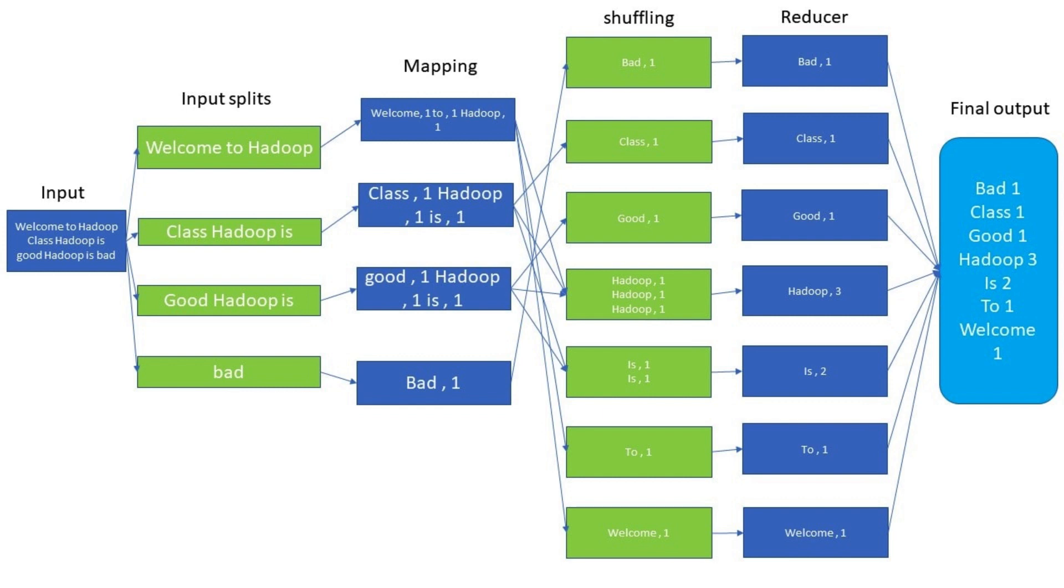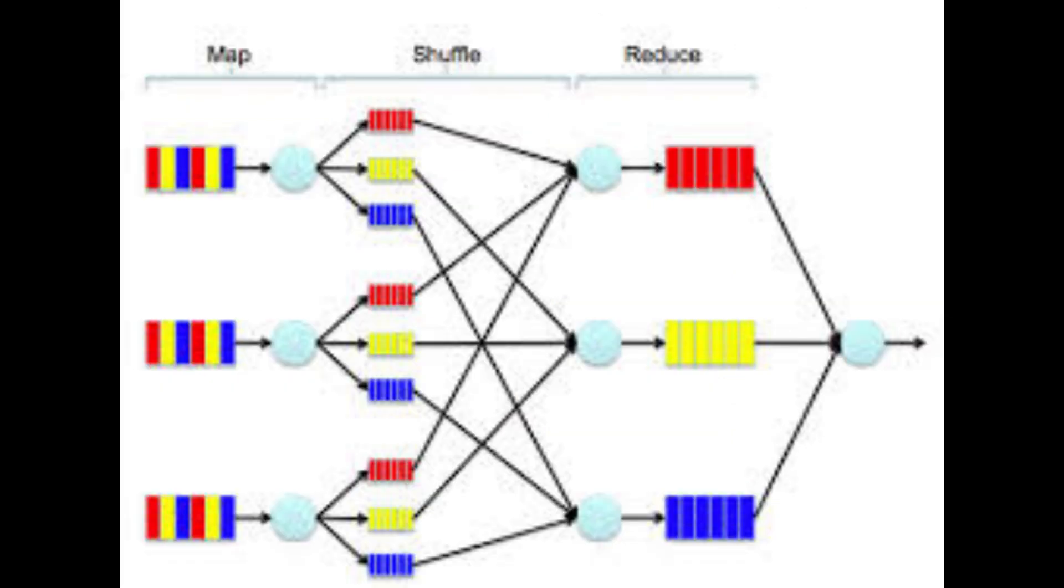MapReduce is particularly well-suited for batch processing tasks that can be broken down into independent units of work. It has been used for a wide range of applications, including log analysis, data transformation, web indexing, and machine learning training.